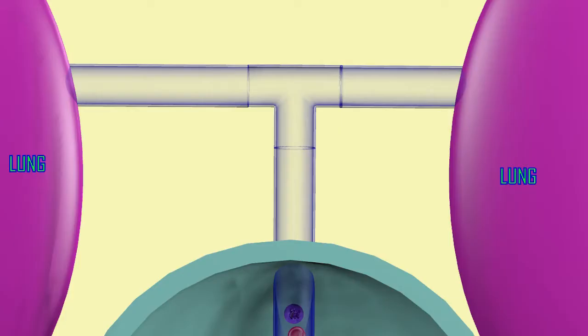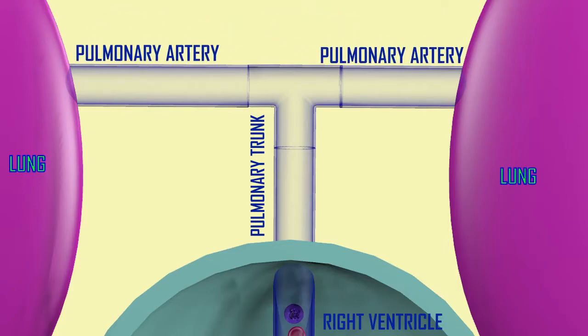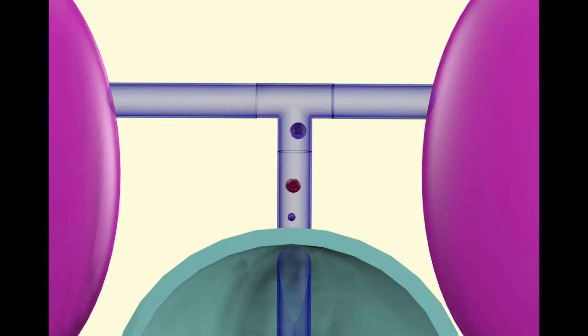this allows blood to go from the right ventricle, which now has a higher pressure, into the pulmonary trunk, which has a lower pressure. So, that's how we would be exiting the right ventricle.